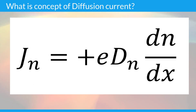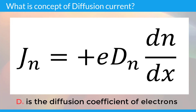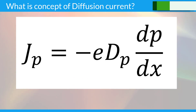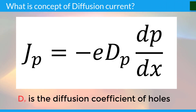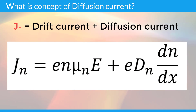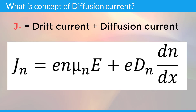The diffusion current density due to electrons is given by Jn = +e · Dn · (dn/dx), where Dn is the diffusion coefficient of electrons. The diffusion current density due to holes is given by Jp = -e · Dp · (dp/dx), where Dp is the diffusion coefficient of holes. The total current density due to electrons is the sum of drift and diffusion currents: Jn = e·n·μn·E + e·Dn·(dn/dx).